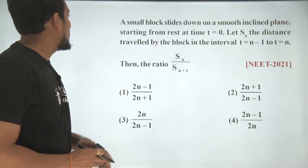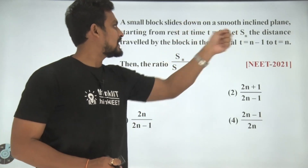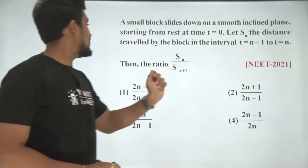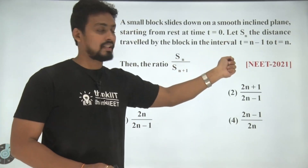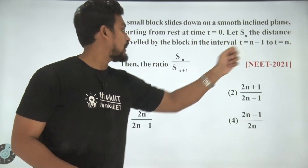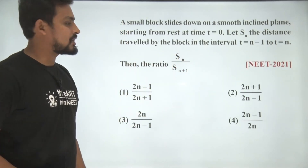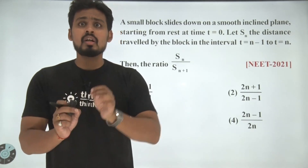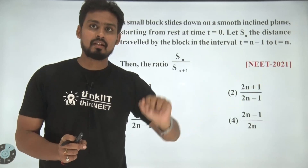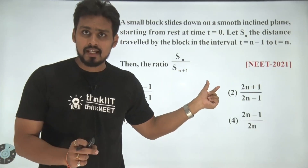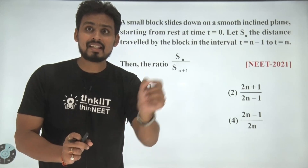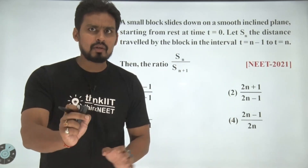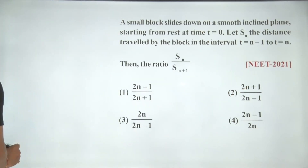A small block slides down a smooth inclined plane starting from rest at time t equals 0. Let Sn be the distance traveled by the block in the interval n−1 to n. Then the ratio Sn upon S(n+1) is what? Sn is the distance traveled from n−1 second to n second, and S(n+1) is the distance from n second to n+1 second.